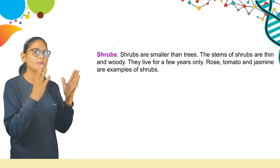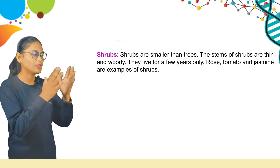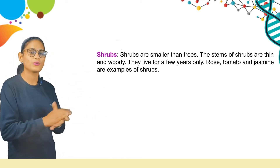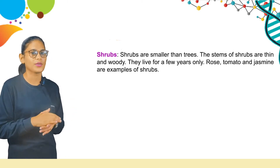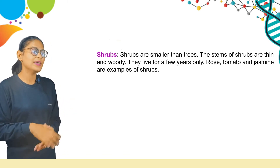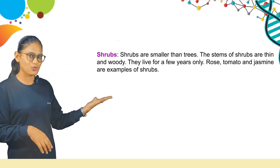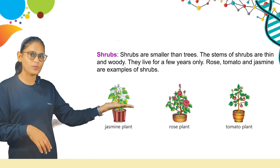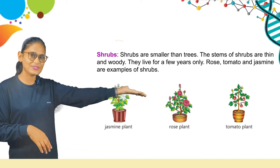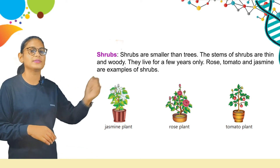Students, what are herbs? Herbs are smaller than trees, right? They are shrubs. Here are some pictures: jasmine plant, rose plant, and tomato plant.